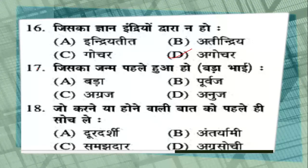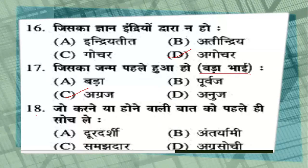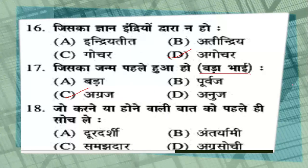Question number 17: जिसका जन्म पहले हुआ हो, या बड़ा भाई — options: बड़ा, पूर्वज, अग्रज, या अनुज. It's a very easy question — correct answer is अग्रज. Question number 18: जो करने या होने वाली बात को पहले ही सोच ले — options: दूरदर्शी, अंतर्यामी, समझदार, या अग्रसोची. The correct answer is अग्रसोची — जो पहले ही सोच ले उसे बोलेंगे अग्रसोची.